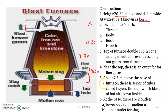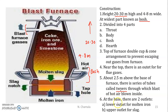At about 2.5 meters above the base of the furnace there is a series of tubes called tuyeres. Through the tuyeres, a hot blast of dry air is taken inside for the heating purpose.